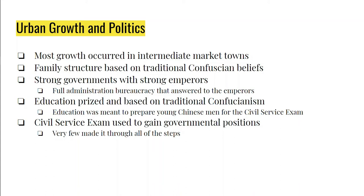Both the Ming and Qing dynasties had strong government, strong emperors, and a full bureaucracy and administration. The emperor allowed his administration to run the government while he focused mainly on cultural and religious matters. Education became extremely important — based on the teachings of Confucius — and spread throughout China, especially when the civil service exam became the only way to advance in a government career.